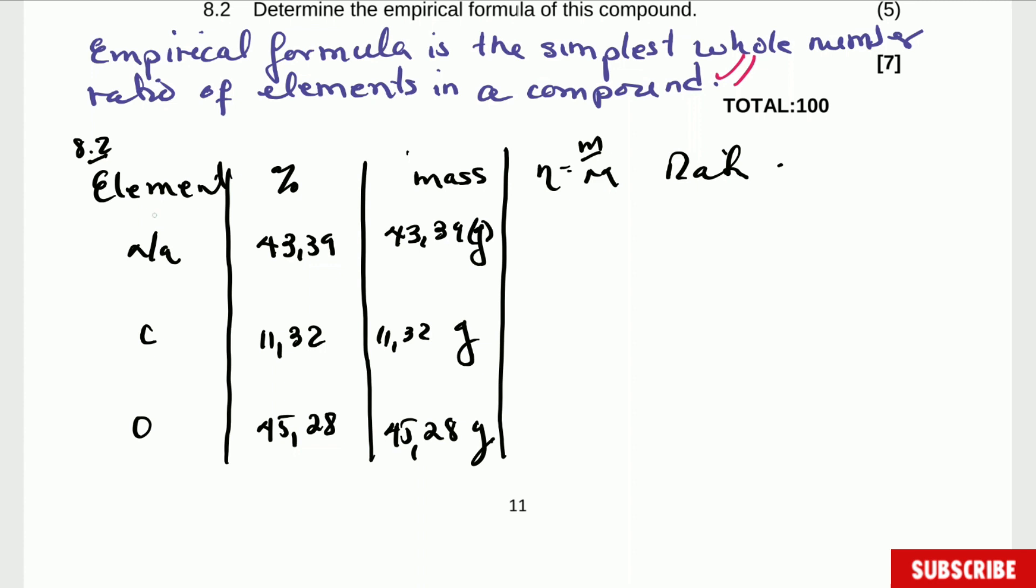Now we have to calculate the number of moles for each of them. We are going to calculate the number of moles for each of them and obviously you need the periodic table. So number of moles is equal, I'm not going to write the formula because it's already written there. So it's 43.39 and the molar mass of sodium is 23. Alright so we'll get here that the number of moles is equal to 1.89.